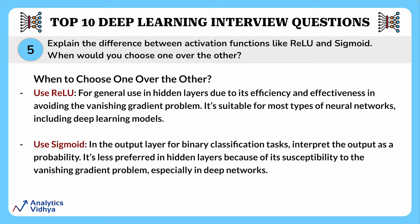Sigmoid maps any input to a value between zero and one, making it suitable for output layers in binary classification tasks where the output is interpreted as a probability. ReLU's general use is in hidden layers due to its efficiency and effectiveness in avoiding the vanishing gradient problem, while sigmoid is preferred for binary classification output layers. Sigmoid is less preferred in hidden layers because of its susceptibility to the vanishing gradient problem, especially in deep networks.